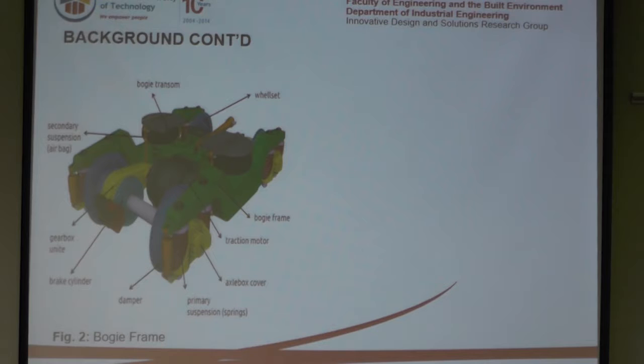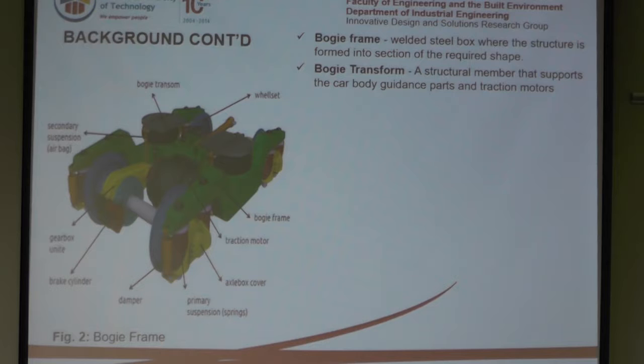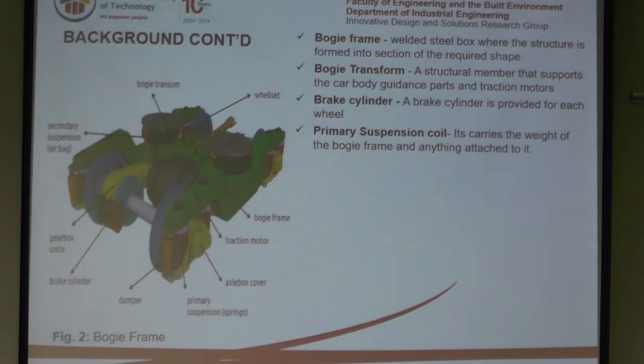For those who have not seen the bogey frame before, this is how it looks. It is a structure that the shell sits on. It's actually a welded steel box with structures forming two sections into a required shape — a structural member that supports the body of the wagon.